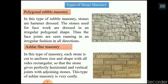The next type is ashlar fine masonry. In this type of masonry, each stone is cut to uniform size and shape with all sides rectangular, so that the stone gives perfectly horizontal and vertical joints to the adjacent stone. This type of ashlar masonry is very costly, with no cavities or voids present due to the uniform size and shape. The maximum thickness of the bed joint should be 3 mm.